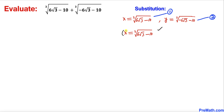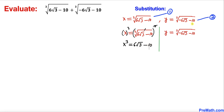Focusing on equation 1, we take both sides to the power of 3. The cube and cube root undo each other, leaving us with x³ = 6√3 − 10. We repeat the same process for equation 2, giving y³ = −6√3 − 10.